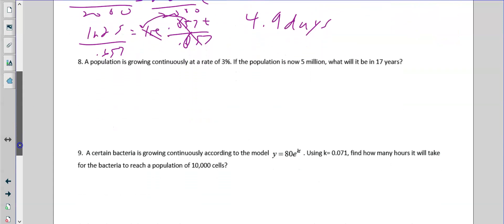Number eight. Population is growing continuously at three percent, 0.03. Population is now five million. What will it be in 17 years? Future amount starting at five, continuously, 0.03, 17. About 8.8 million people.